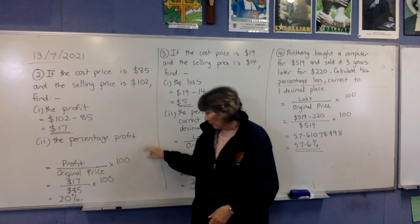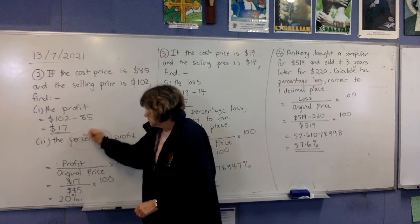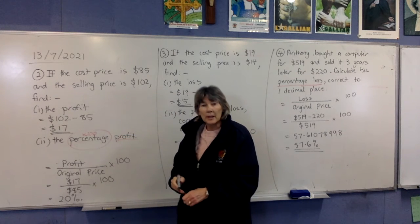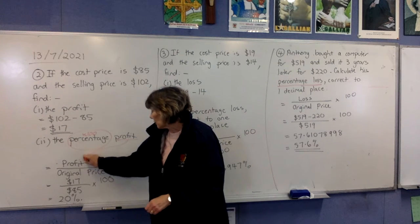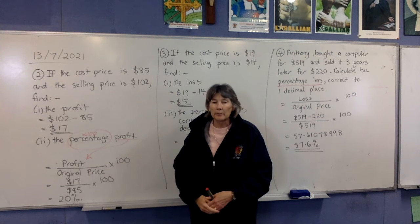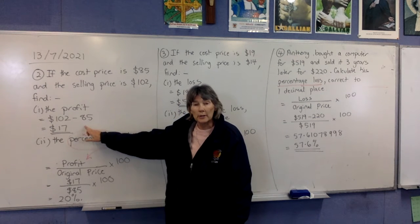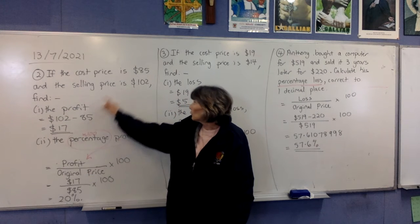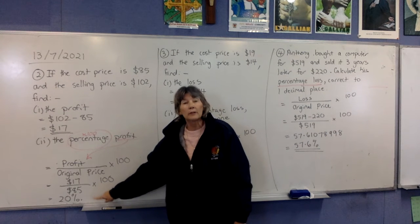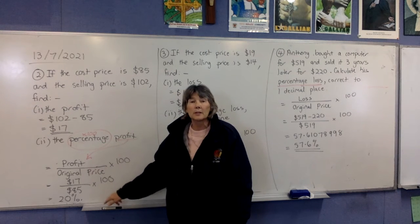For the percentage profit, remember that percentage means times 100. The word 'profit' is the important word in the question — that goes to the top of the fraction. It's always the original price on the bottom, which is the cost price. So on the top we have our profit of $17, on the bottom we have the cost price of $85, times by 100. Put that in your calculator and you'll get 20 — don't forget the percentage sign: 20%.